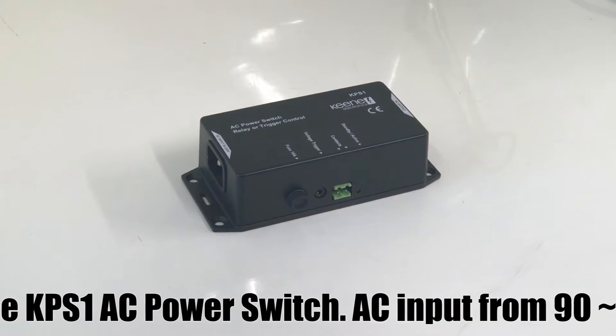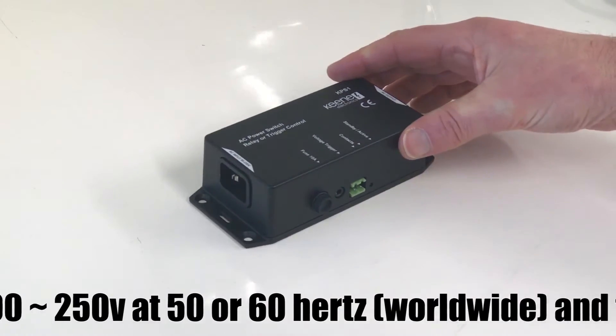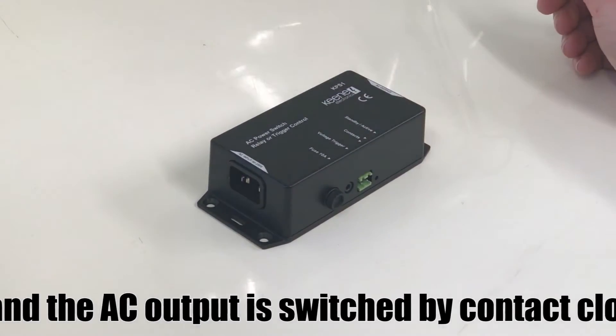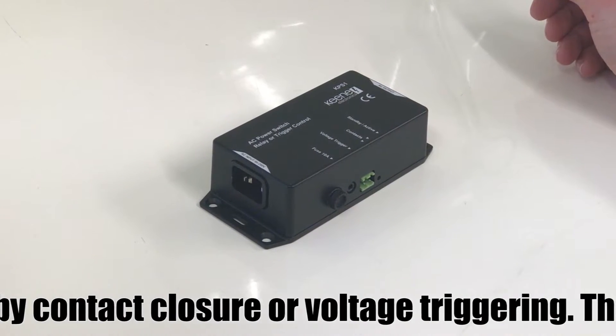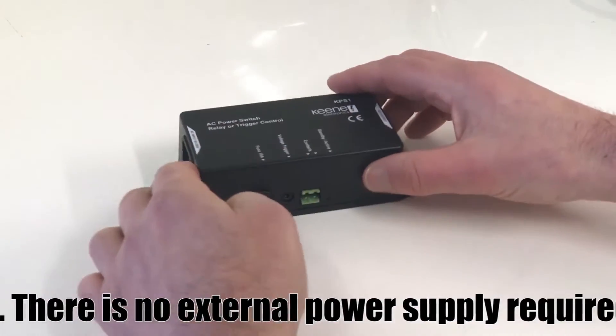This is the Keen KPS-1 AC power switch. It's quite a simple product. We have AC input at this end of either 90 through 250 volts at either 50 or 60 hertz, so that's worldwide compatible, and an AC outlet at this end.